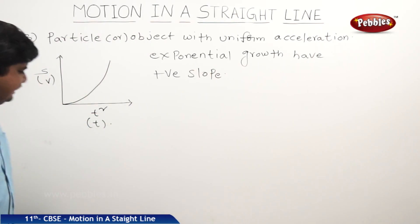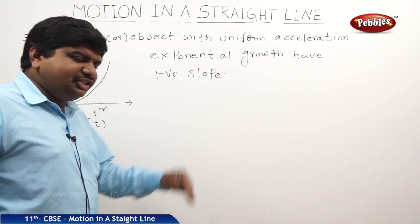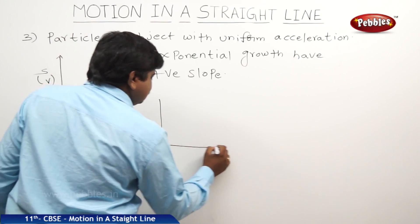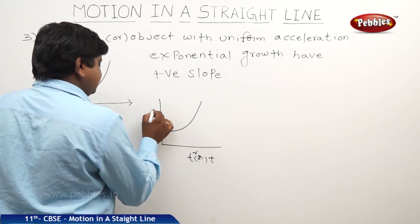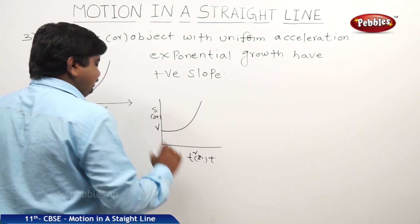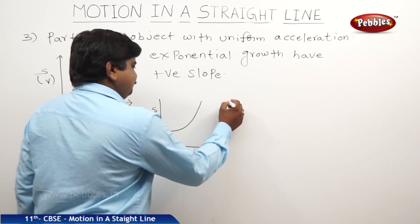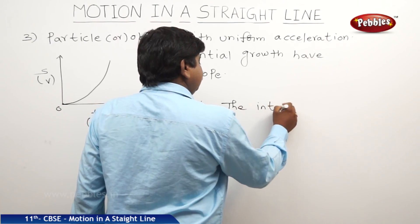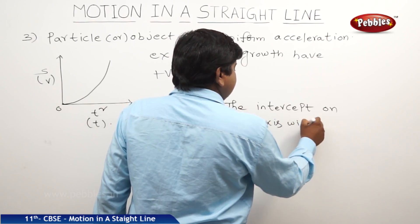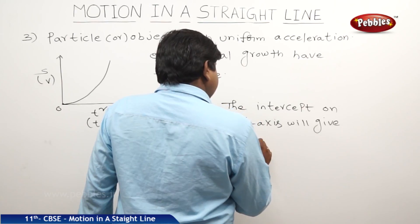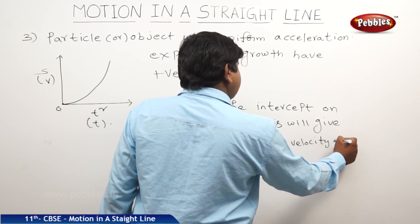This graph indicates the initial velocity or displacement is 0. If initial velocity or displacement is not 0, then the graph is like this. Again, it is t square or t whether it is s or v. The intercept on y axis gives the initial velocity or initial displacement of the body.